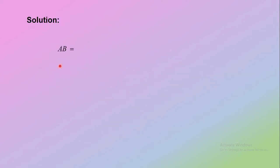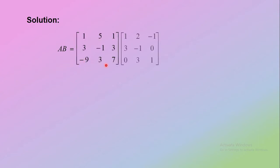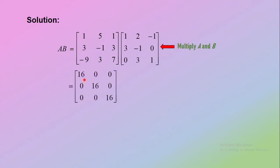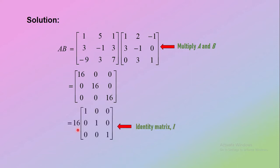First, find matrix AB by multiplying matrix A and matrix B. We get a matrix with elements 16, 0, 0 in the first row; 0, 16, 0 in the second row; and 0, 0, 16 in the third row. Then factorize 16 out to obtain the identity matrix. Therefore, matrix AB equals 16 times the identity matrix.